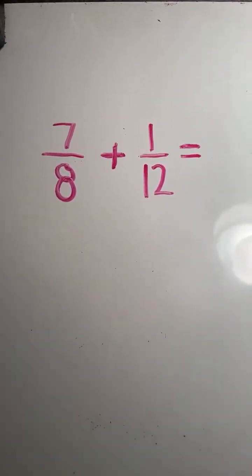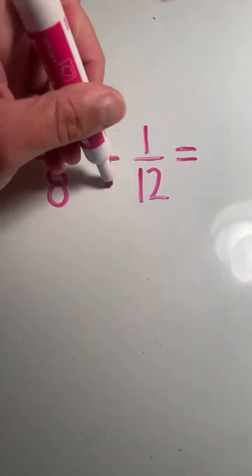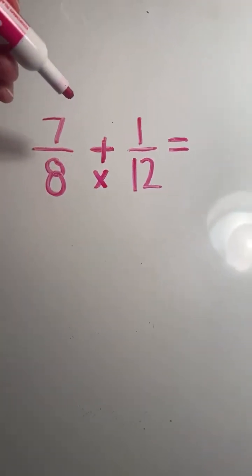So step 1, we multiply to find a common denominator, so 8 times 12 equals 96.